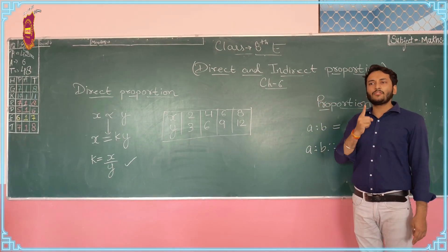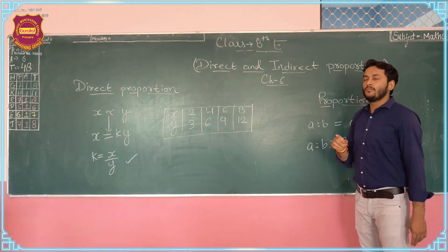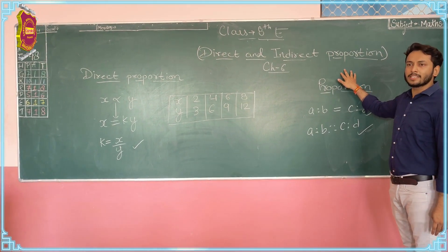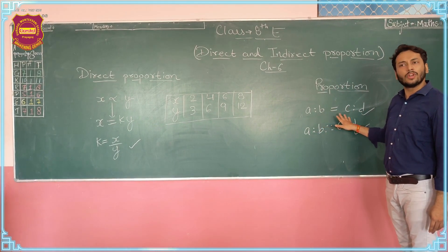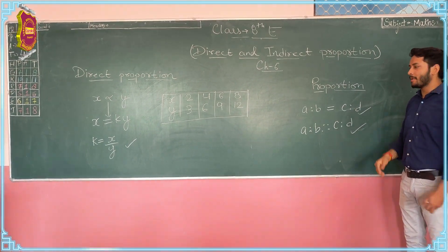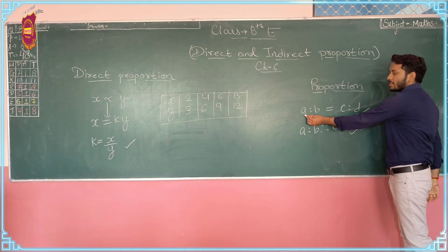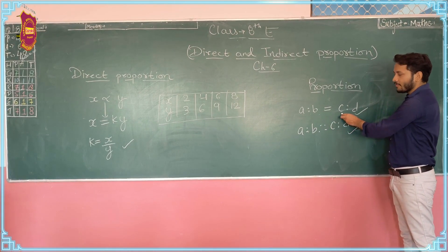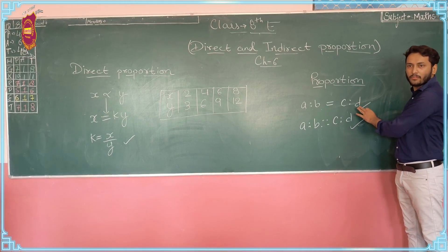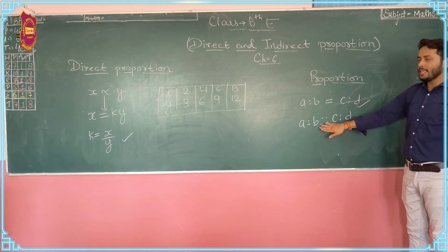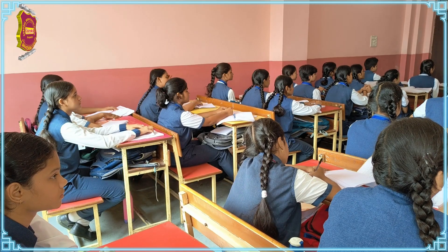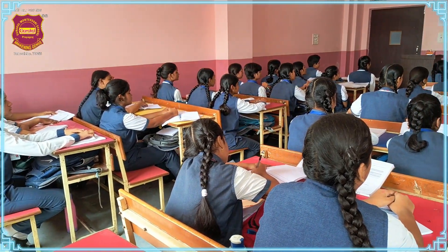First of all, we have to clear out what proportion means. Proportion is the relationship between two ratios. Let's take an example: the first one is A ratio B, and the second one is C ratio D. If the two ratios are equal, then we can say these ratios are in proportion. Is that clear?